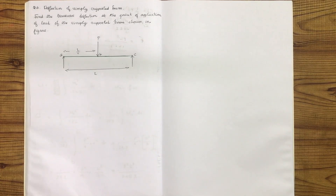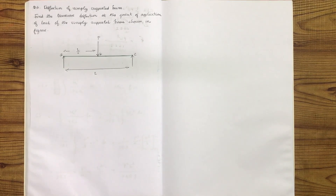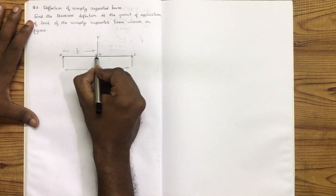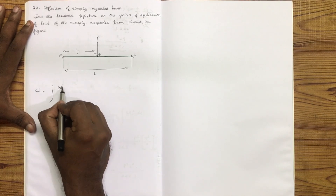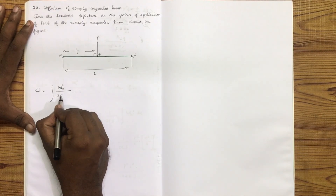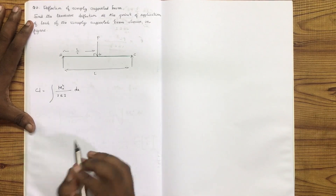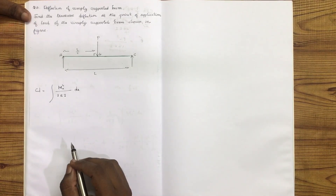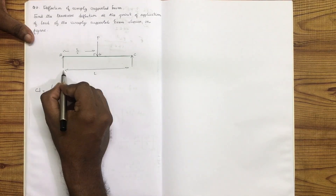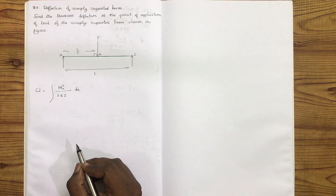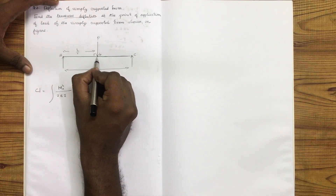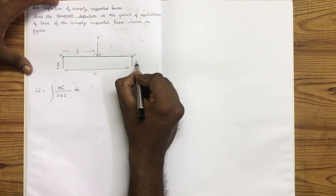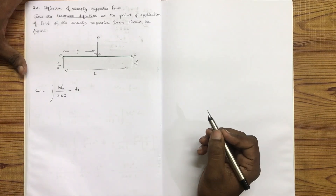This is a simply supported beam deflection problem. We are computing the transverse deflection using the integral of Mx squared divided by 2EI dx. The beam has a point load P at the midpoint, giving reactions of P by 2 and P by 2 at each support.